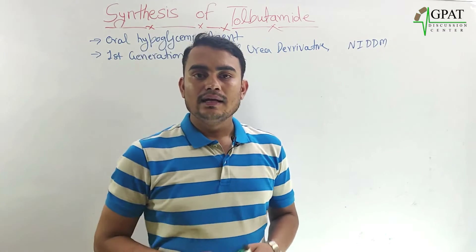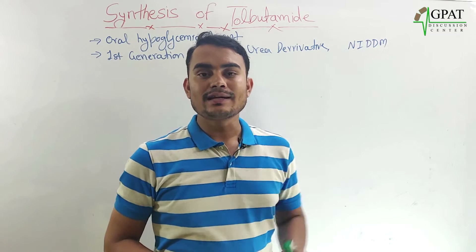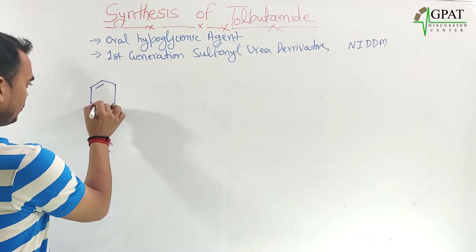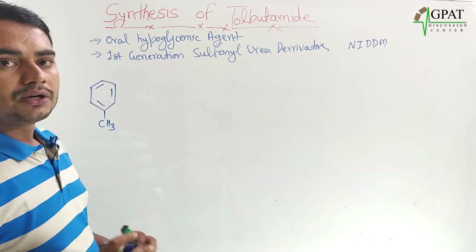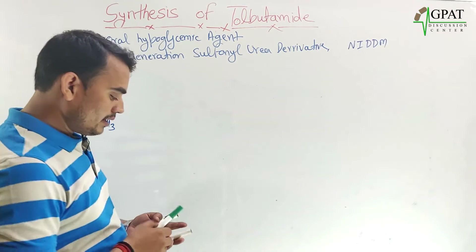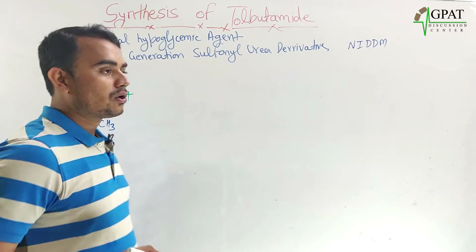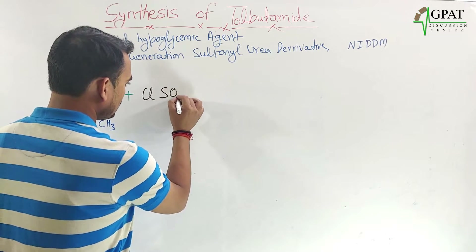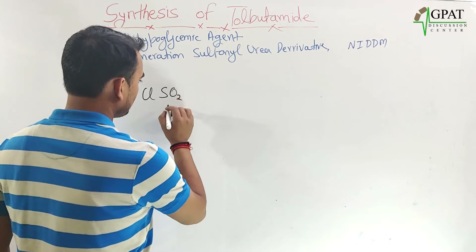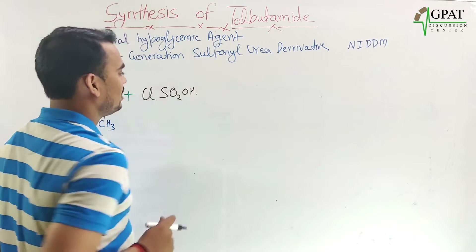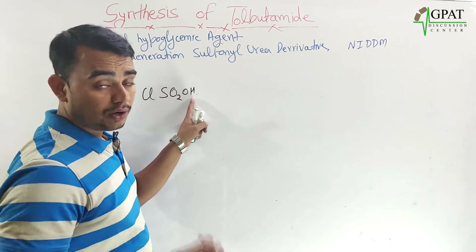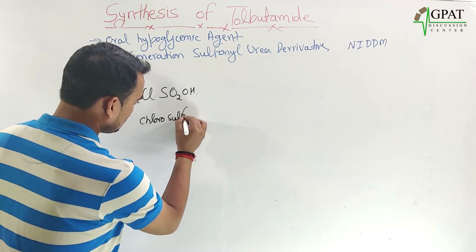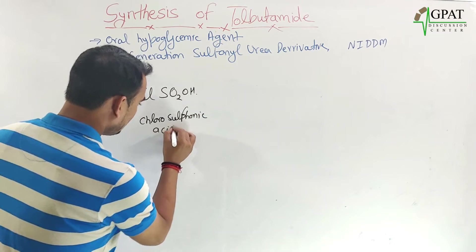Let's discuss the synthesis. The synthesis of tolbutamide starts with its starting material, which is toluene — specifically paratoluene. This toluene is then reacted with chlorosulfonic acid. Chlorosulfonic acid can be written as ClSO2OH or ClSO3H.